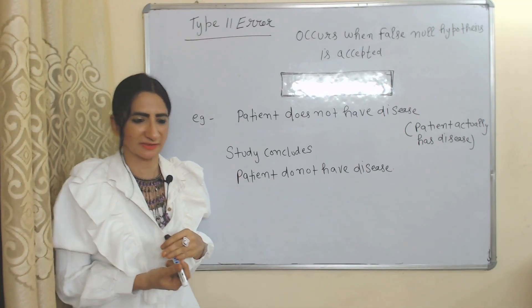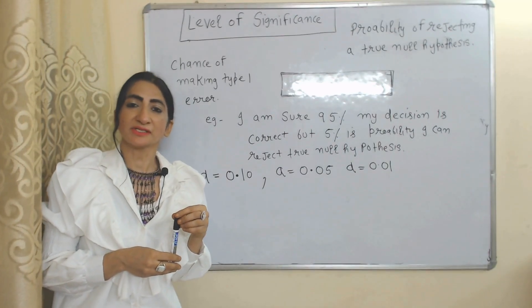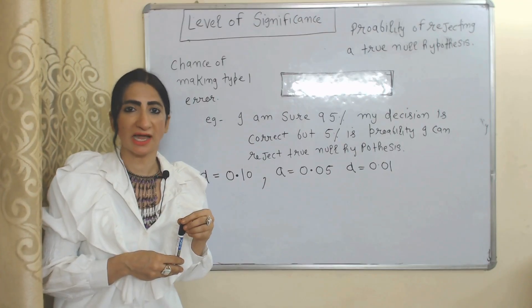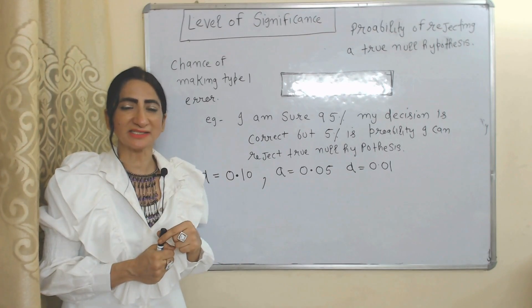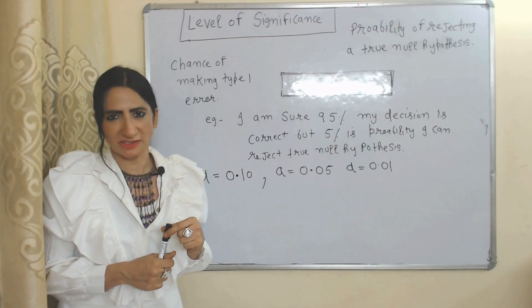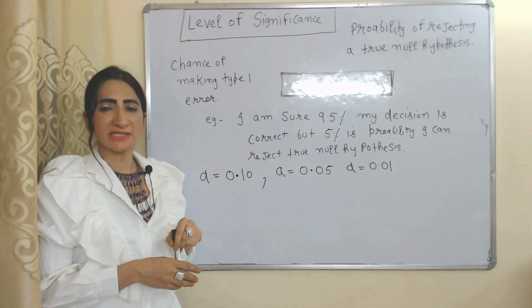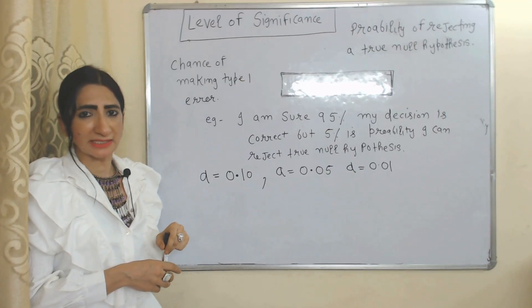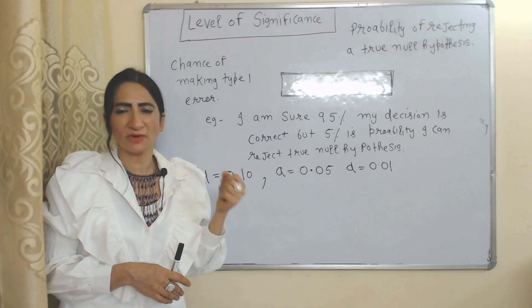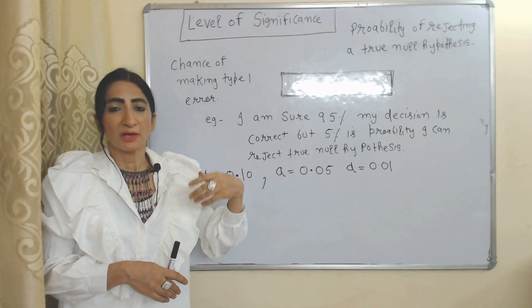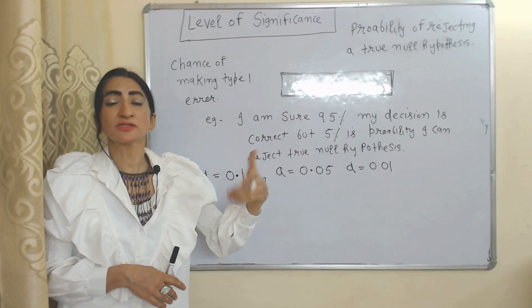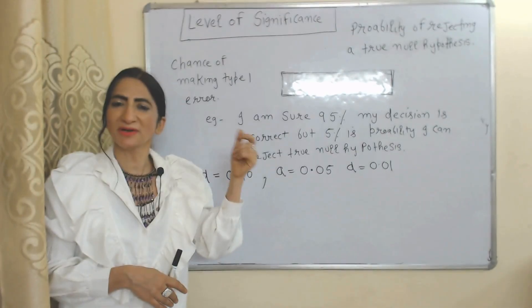Level of significance: our study will be successful if we accept the true null hypothesis, but this is not always possible. The probability of rejecting a true null hypothesis — or we can say the chance of making a type 1 error — will be called the level of significance.